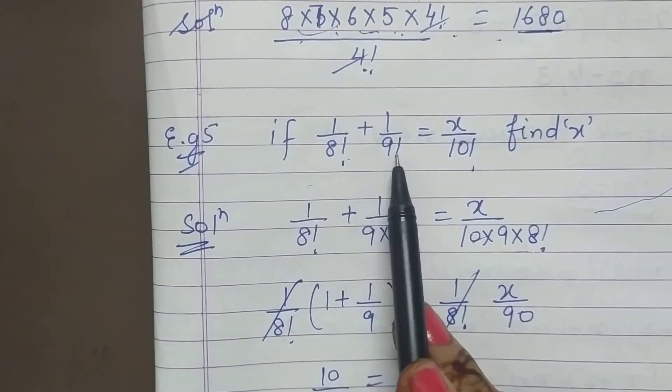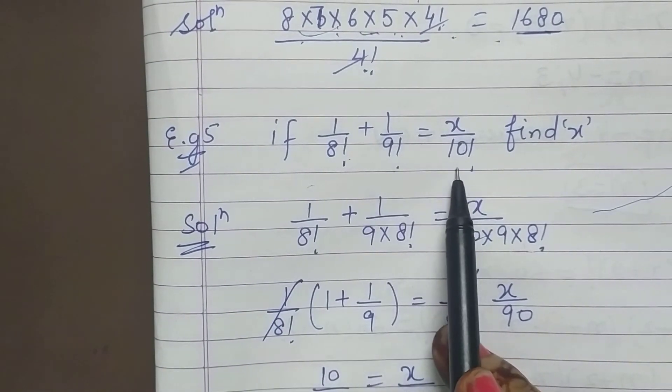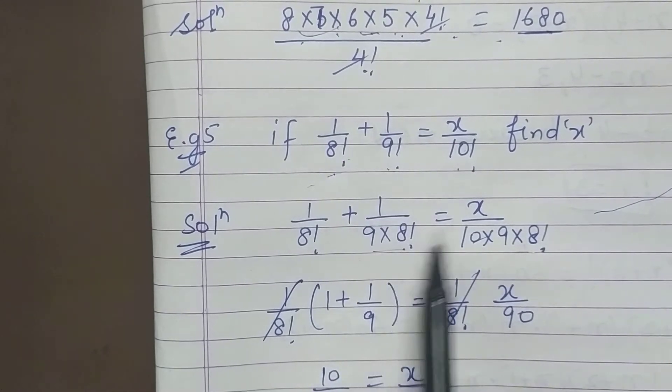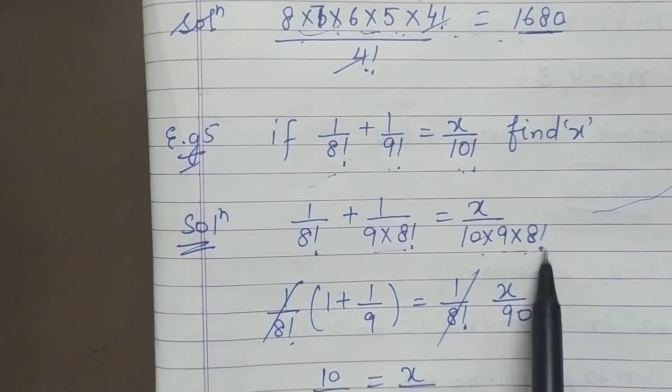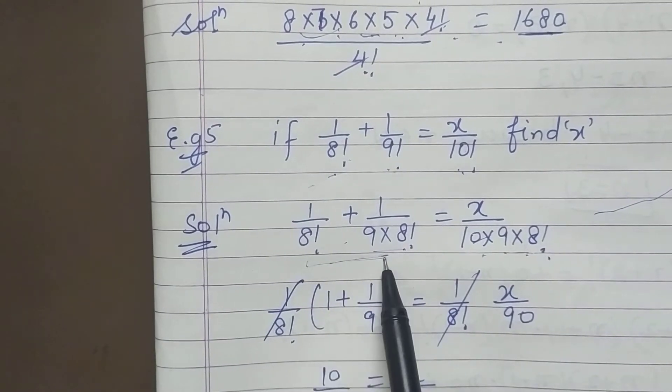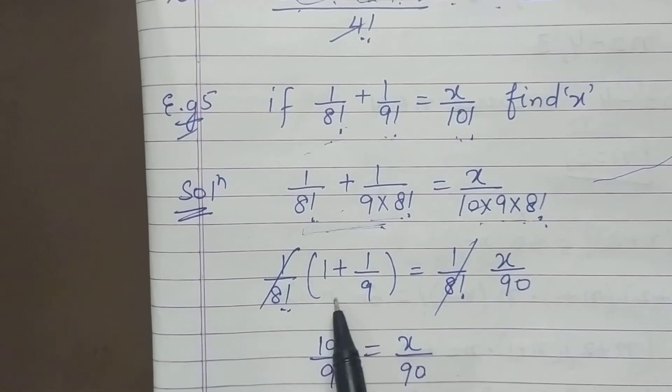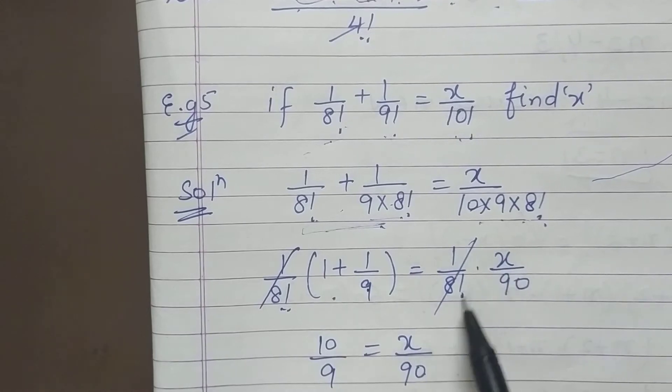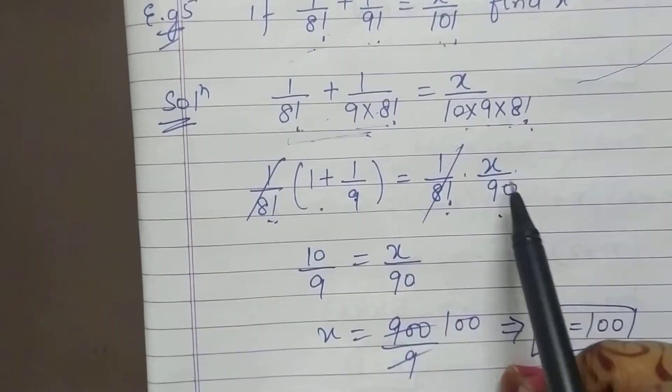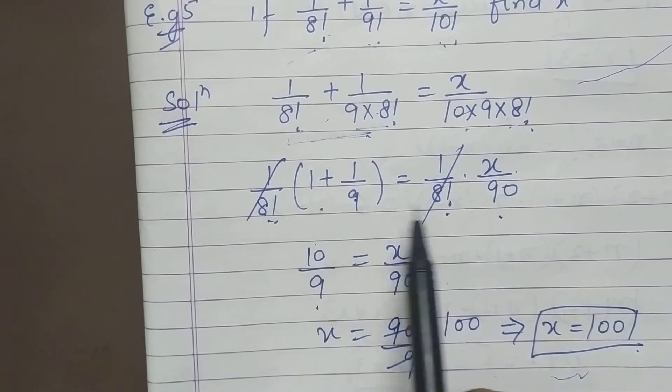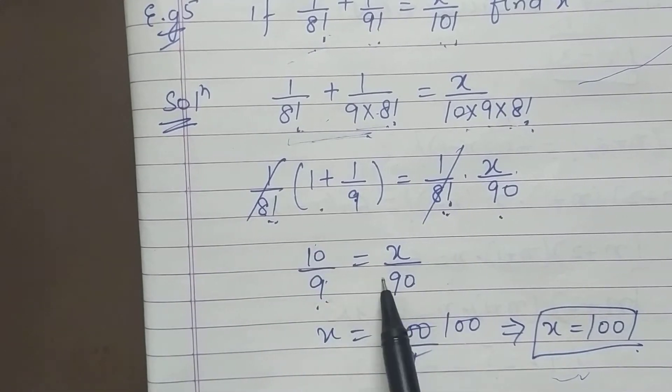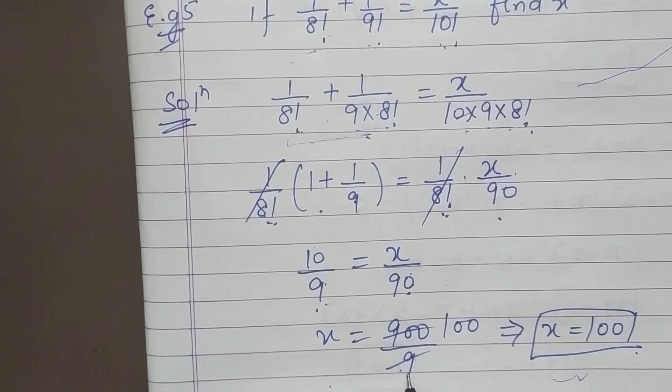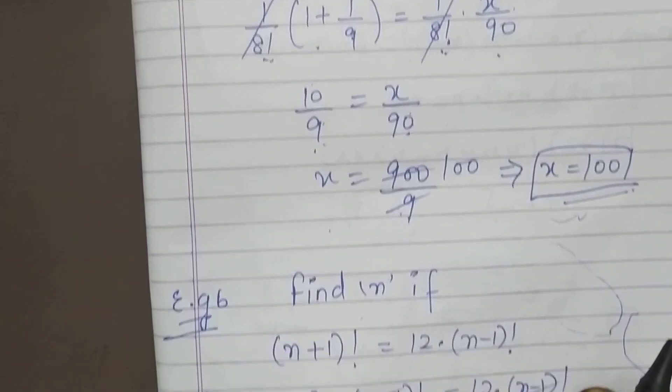If the question is this. Say 1 upon 8 factorial plus 1 upon 9 factorial equals x upon 10 times 9 times 8 factorial. Take the minimum one into consideration. So what can you write for this? 9 into 8 factorial. What can you write for 10? 10 into 9 into 8 factorial. Take out 1 by 8 factorial as common. So what remains? Here I got 1 plus 1 by 9, and here 1 by 8 factorial times x by 90. So this is 10 by 9 equals x by 90. 1 by 8 factorial cancelled. So x is equal to 900 by 9. So you got the answer, x is equal to 100.